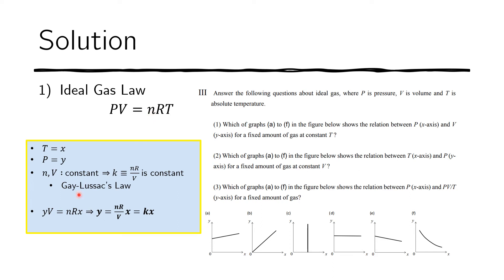So we keep it there. R is constant. Then T is replaced with x. So here we have this relationship. Now we divide both sides by V. We have this, again, a constant k times x. So y equals kx.